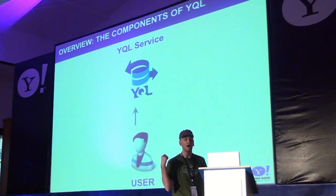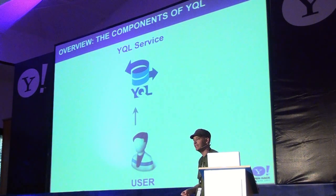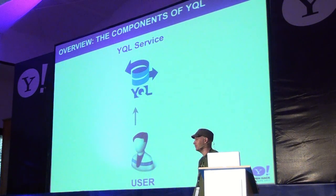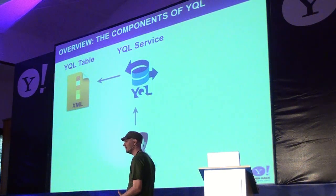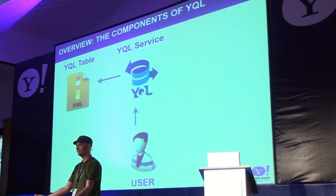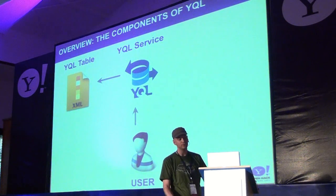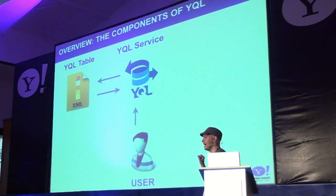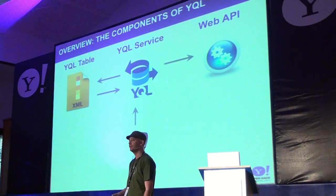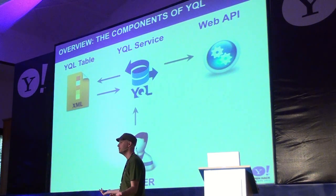So they issue a request to the YQL service saying 'I want this information.' YQL as a service will say, 'I understand your request and that it's valid, but I have no idea what the Flickr photo API is.' So what the service does is look up its standard YQL data tables — these are XML configuration files that tell the YQL service how to actually access data like Flickr photos. YQL tables will confirm there's a table available showing how to get Flickr photos, communicate that back to the service, and then make a request out to Flickr.